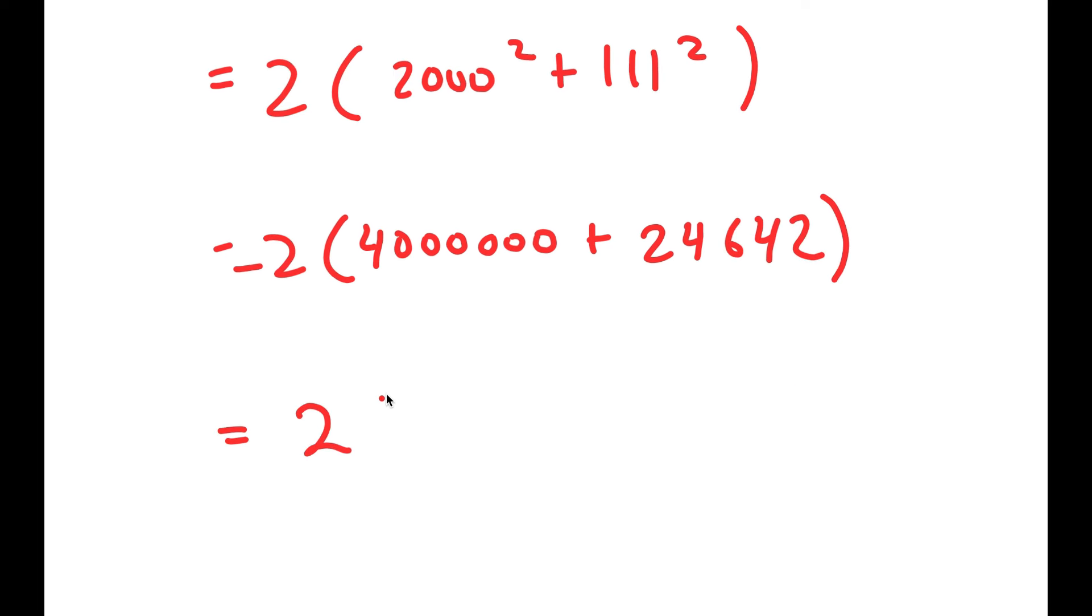So now I get 2 times 4,000,000 plus 24,642, which is equal to 8,000,000 plus 24,642.